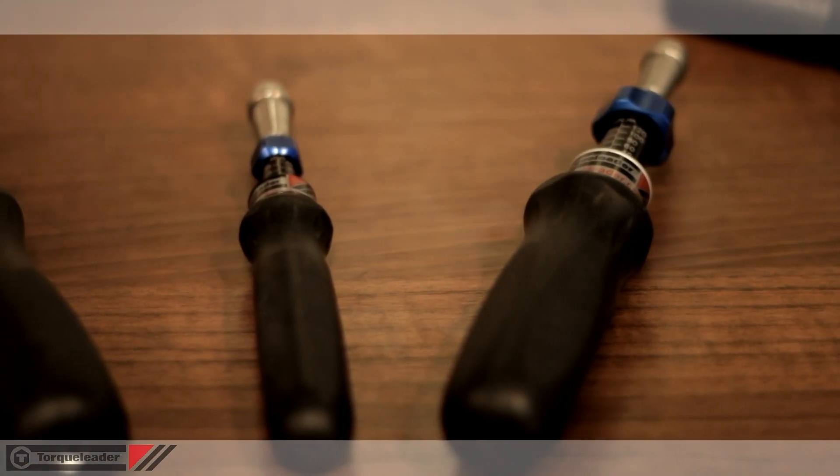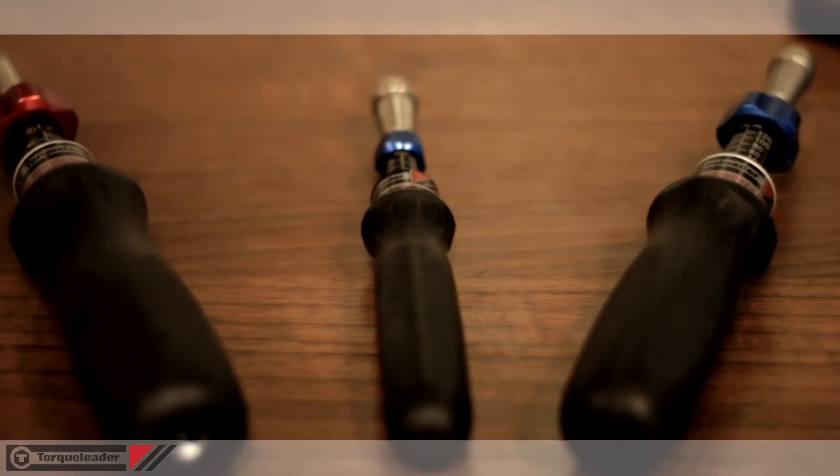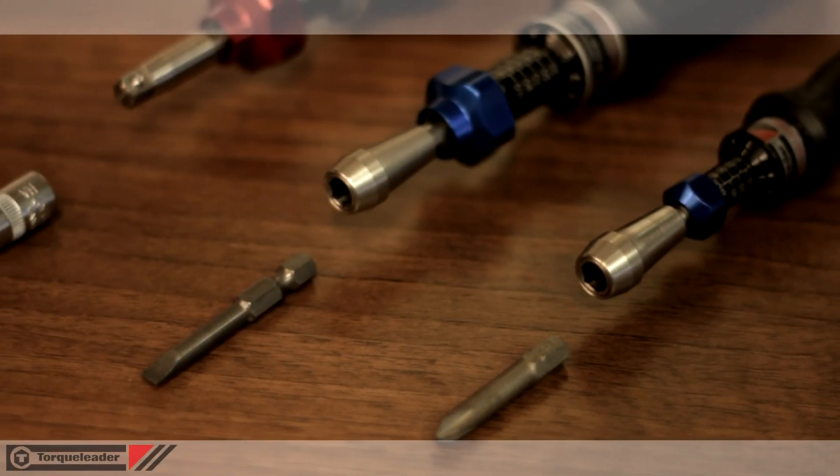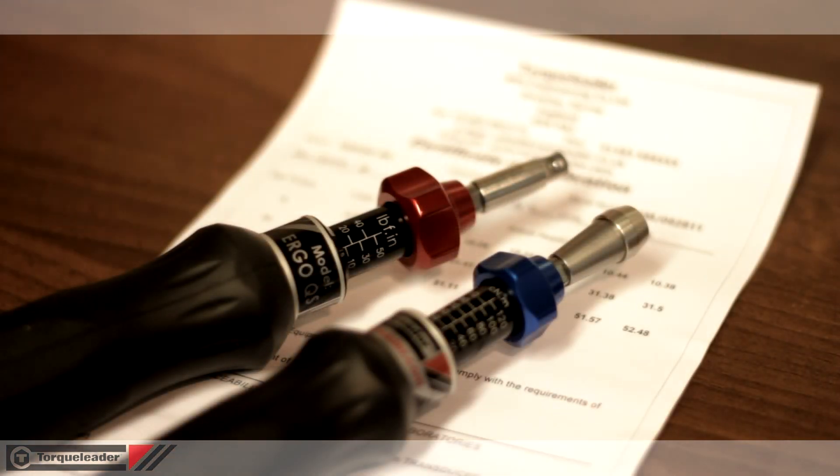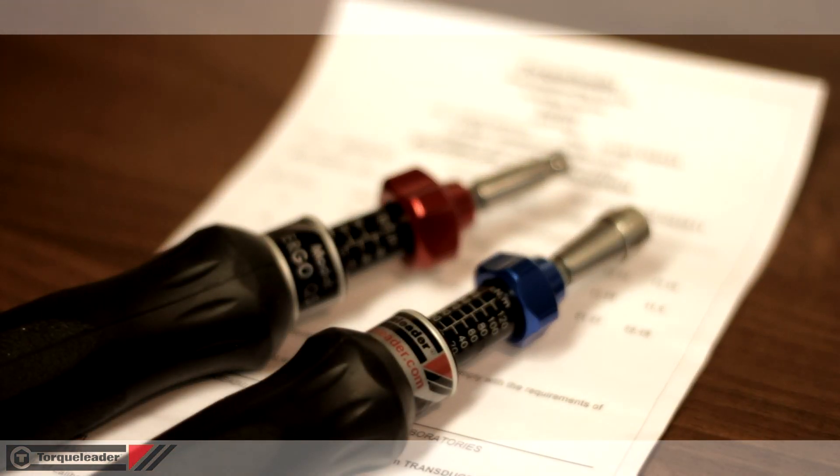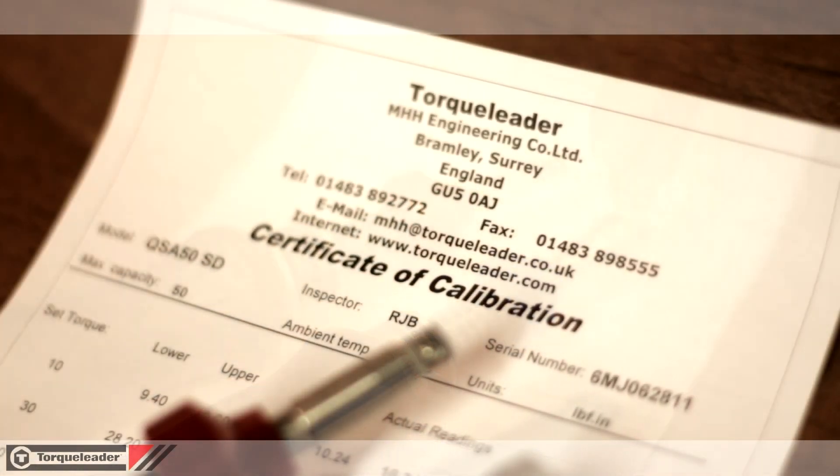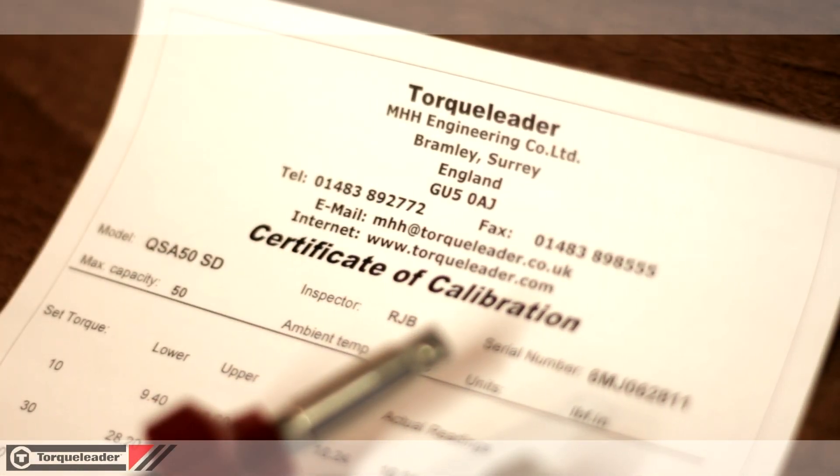A wide range of models are available, covering an overall range from 5 centinewton metres up to 9 newton metres. Equivalent Imperial SCOA versions have a maximum of 80 lb force inch. Each screwdriver is supplied with its own certificate of calibration.